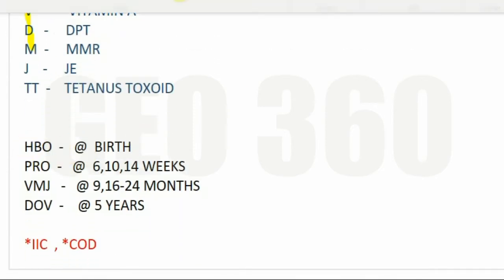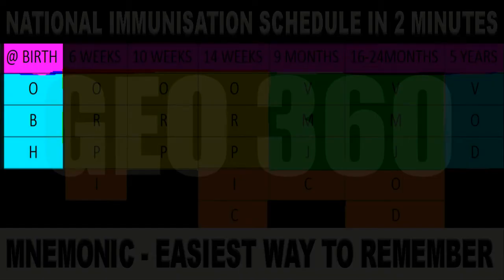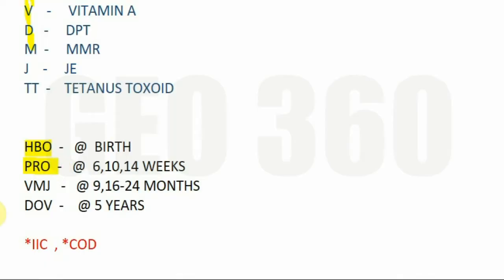At birth you have to remember the mnemonic HBO. HBO is a famous TV channel — you can remember it like that, or as 'happy birthday' since it's given at birth. HBO means at birth you have to give 3 vaccines: Hepatitis B, BCG, and oral polio vaccine.